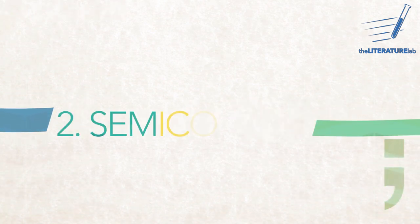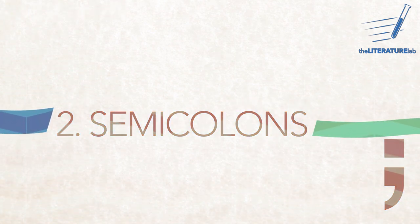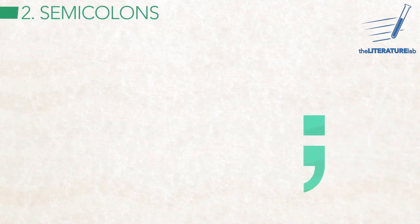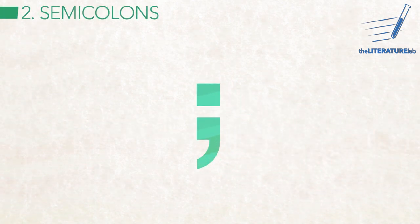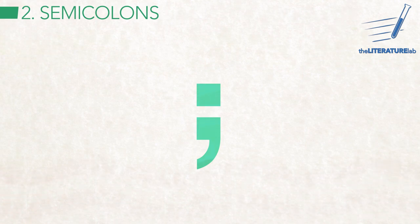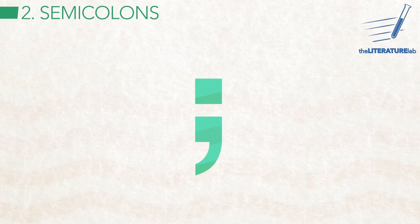Many writers avoid using semicolons because they're scared of making mistakes — but don't be one of those people. You'll learn how useful and essential semicolons are. See how the semicolon looks like a period over a comma? That's because it's halfway between them: stronger than a comma, but weaker than a period. It's like the baby bear in Goldilocks — a pause that's not too short, not too long, but just right.